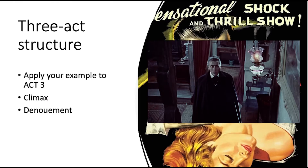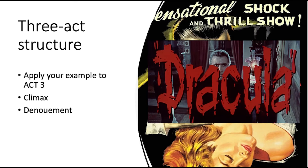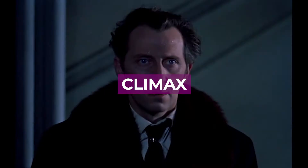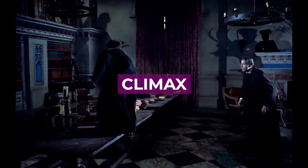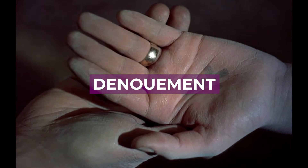Like before, you will apply your example to act three and explain the technique of the climax, then do the same for the denouement. The climax in my example is when Van Helsing destroys Dracula, and the denouement is when Dracula is destroyed and Arthur's wife is returned back to normal, so she's no longer turning into a vampire.